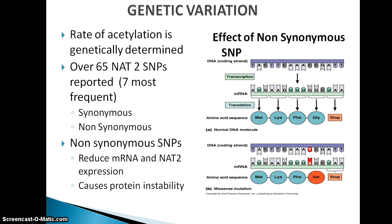The rate of acetylation of isoniazid is genetically determined. To date, over 65 NAT2 SNPs have been reported, of which seven have been found to be the most frequent in populations studied so far. SNPs can be synonymous or non-synonymous. Synonymous SNPs cause no change in amino acid sequence of a protein, while non-synonymous SNPs cause a change in the amino acid sequence, as shown in part B of the diagram. Non-synonymous SNPs reduce messenger RNA expression and thereby reduce NAT2 enzyme expression. In other cases, non-synonymous SNPs have been found to cause protein instability, resulting in variable enzyme activity in patients affected.